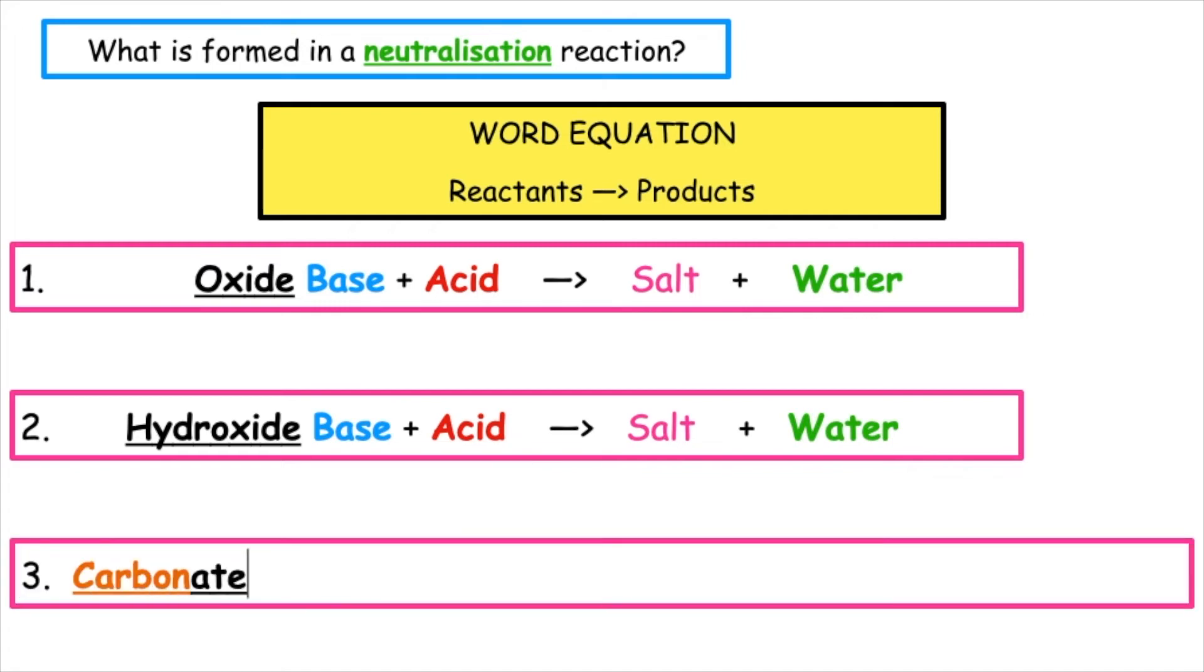The third equation that we have to know is our carbonate base. We always produce salt plus water but in this case we form a third product which is carbon dioxide gas.